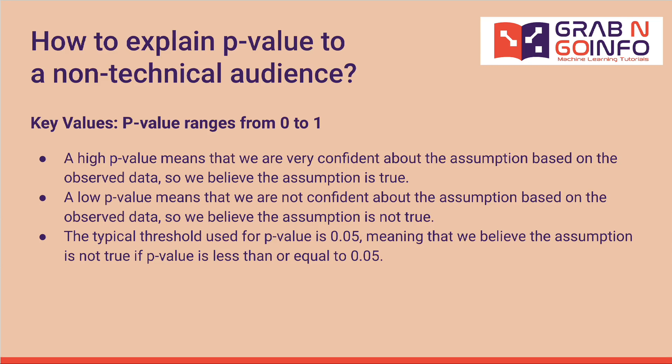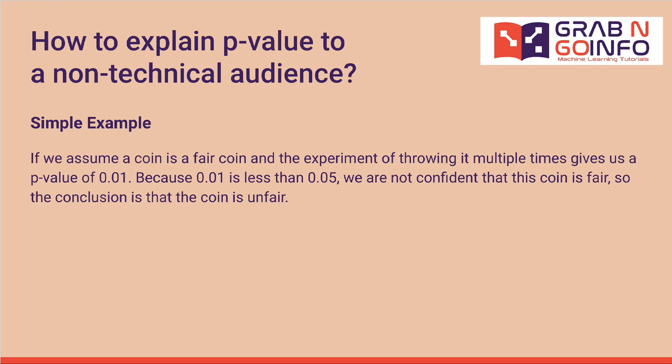Here is a simple example. If we assume a coin is a fair coin and the experiment of throwing it multiple times gives us a p-value of 0.01, because 0.01 is less than 0.05, we are not confident that this coin is fair. So the conclusion is that the coin is unfair.